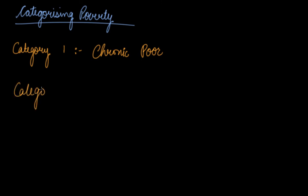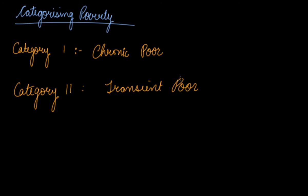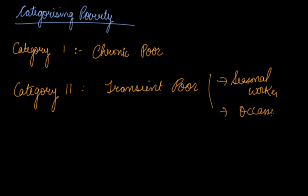Category 2 is the transient poor. These are people who do not have money to spend for a shorter period of time — they are occasionally poor or seasonal workers. Poverty is for a shorter or seasonal period of time; they do not have work right now but will definitely get work after one month, ten days, or twenty days.